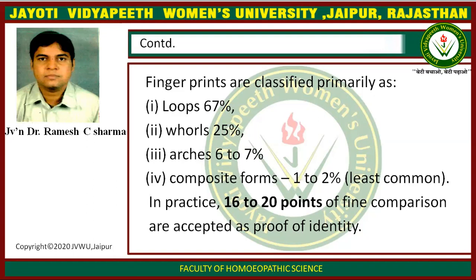In forensic identification, 16 to 20 points of fine comparisons are accepted as proof of identity.